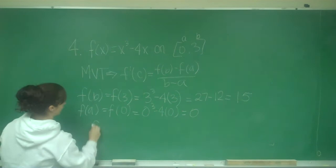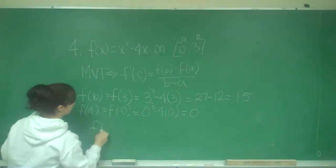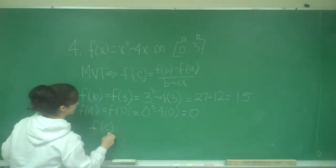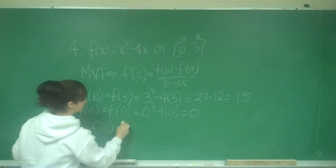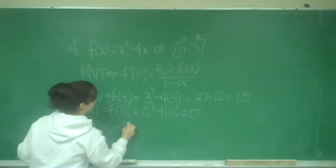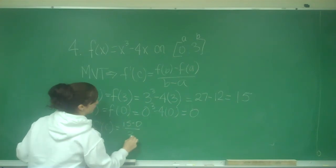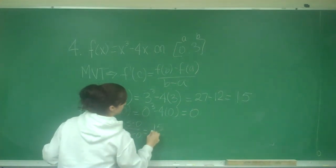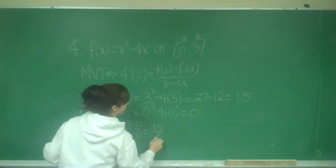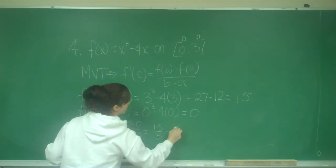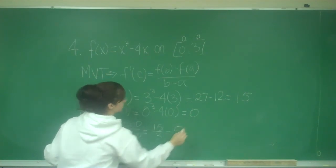When I put those values into my formula, I have f prime of C equals 15 minus 0 over 3 minus 0, so that's 15 over 3, which is 5.